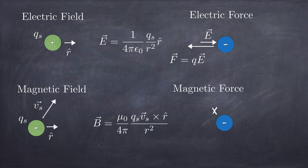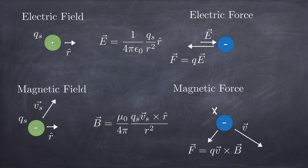Using the right-hand rule, you can see that the magnetic field produced by this positive charge moving up and to the right points into the board at the location of the target charge. To find what force gets produced, you use the force law: Q times V cross B, taking into account the velocity of the target charge. Moving charges produce a field which acts on other moving charges — both the source charge and the target charge have to be moving for this force to happen.